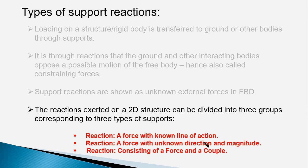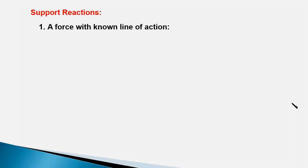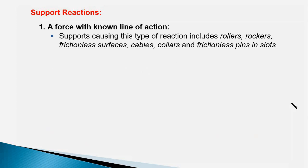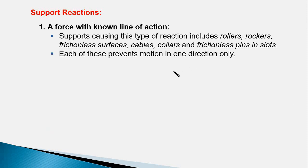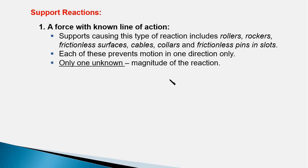The first type is a force with known line of action. In this category fall different kinds of supports: rollers, rockers, frictionless surfaces, cables, collars, and frictionless pins in slots. Each of these types of supports prevents motion in one direction only, and therefore there is only one unknown — the magnitude of the reaction force — while the direction is known.